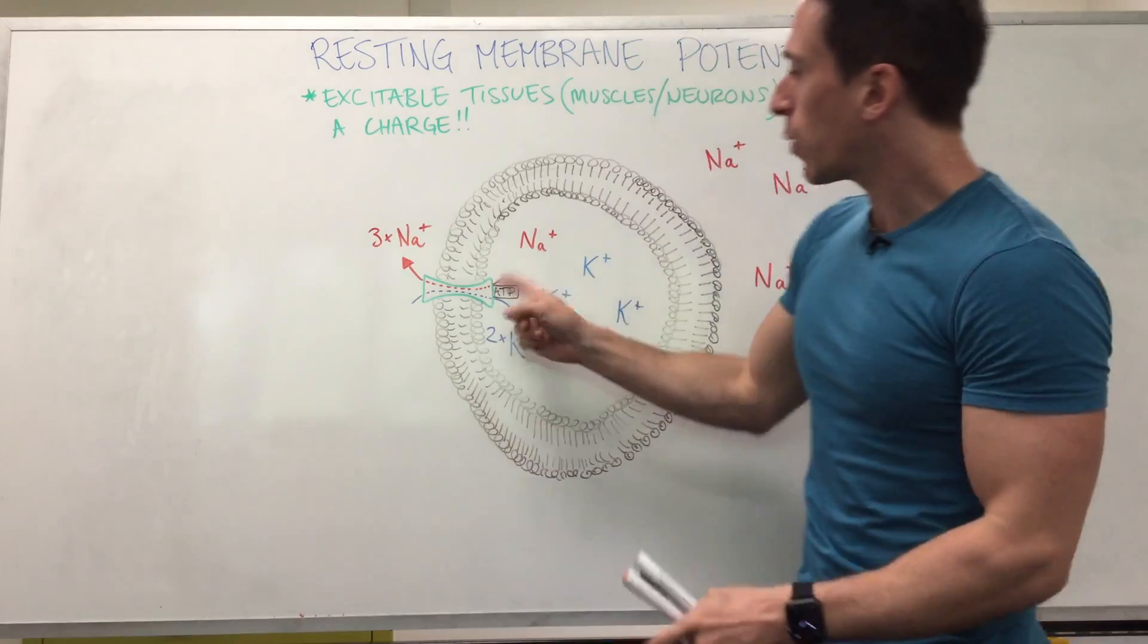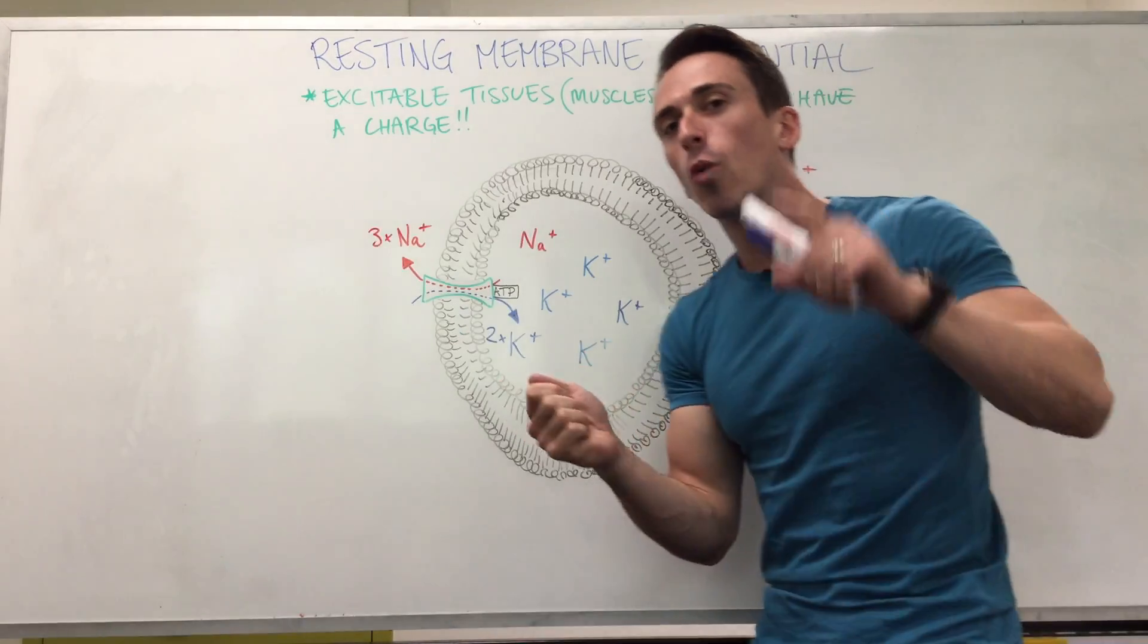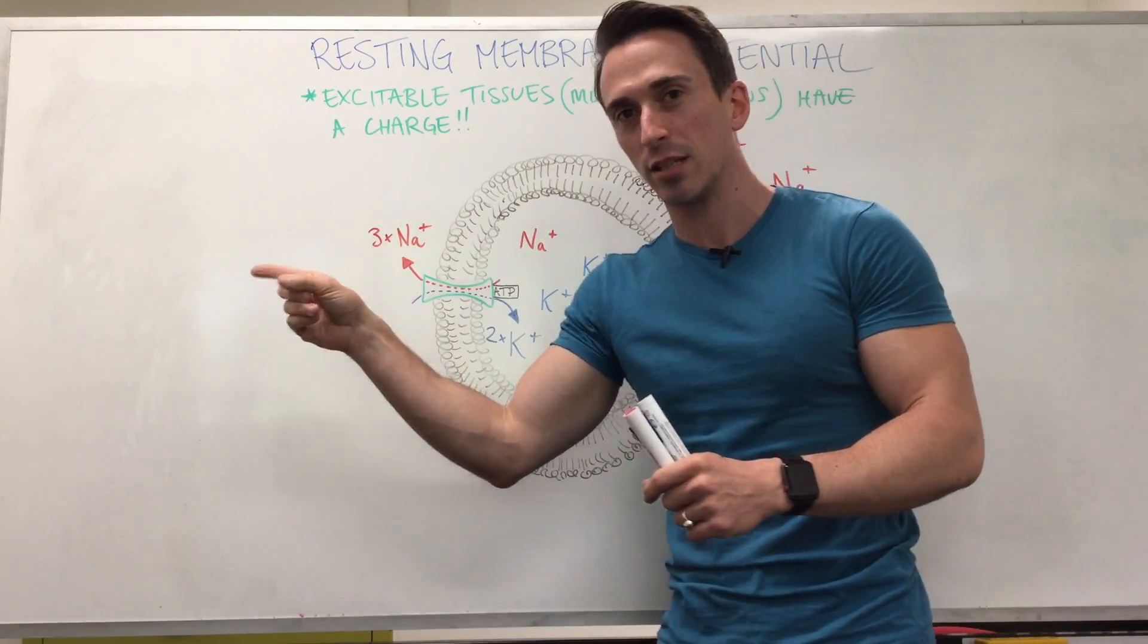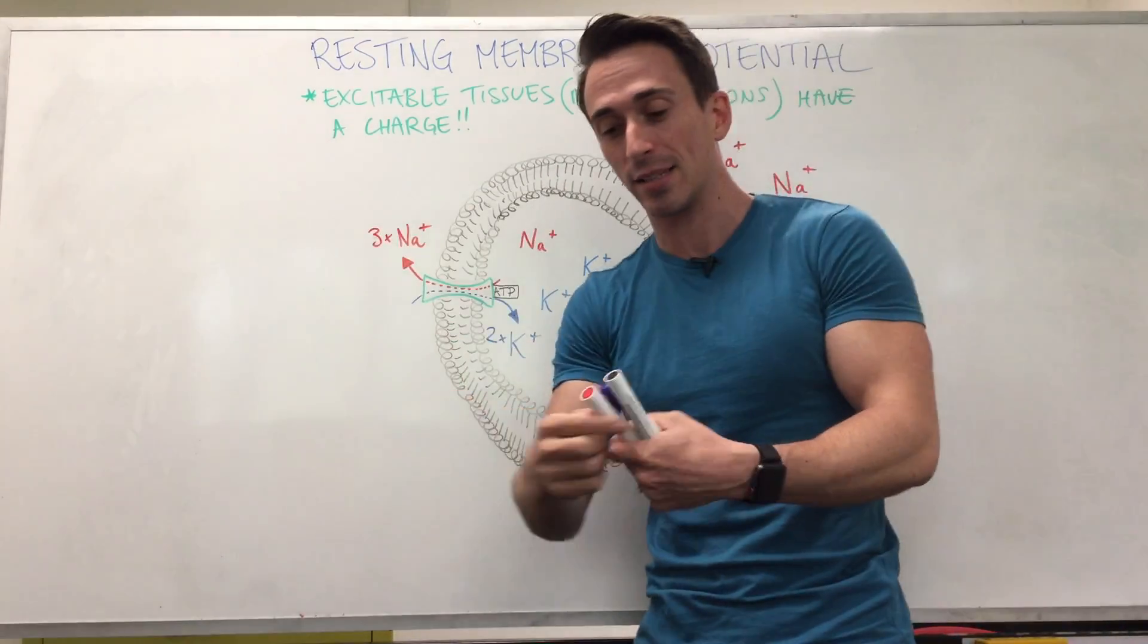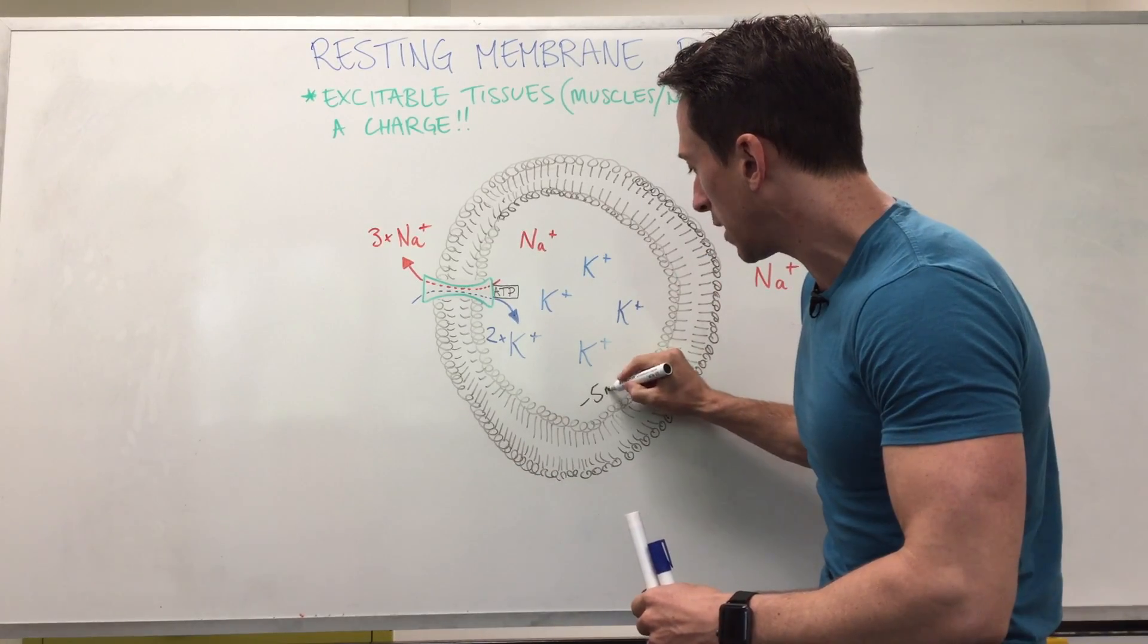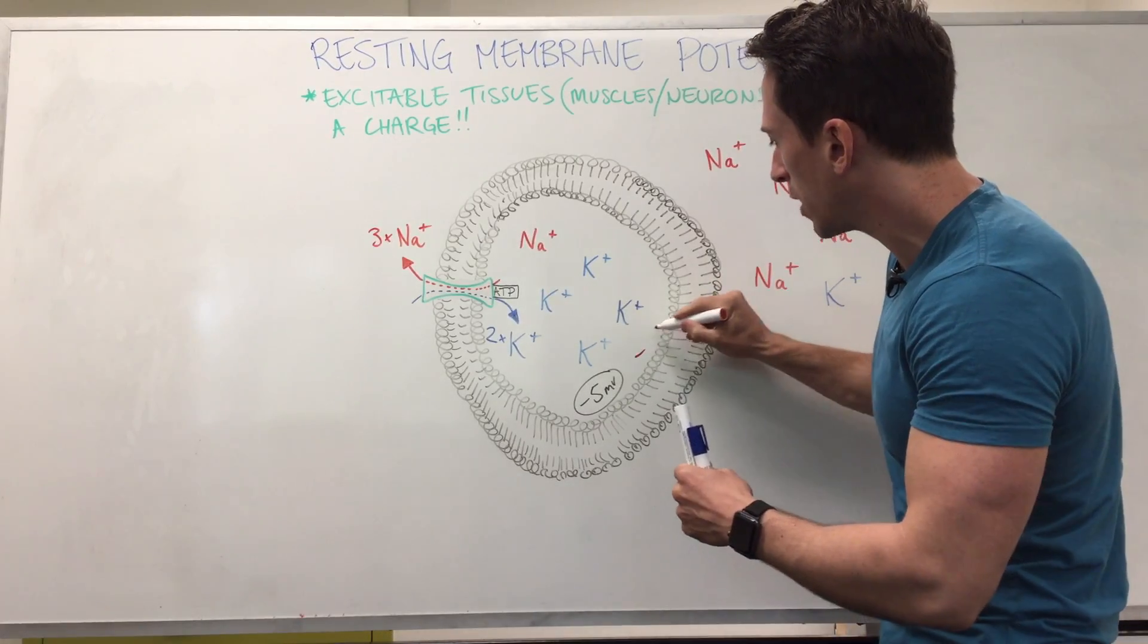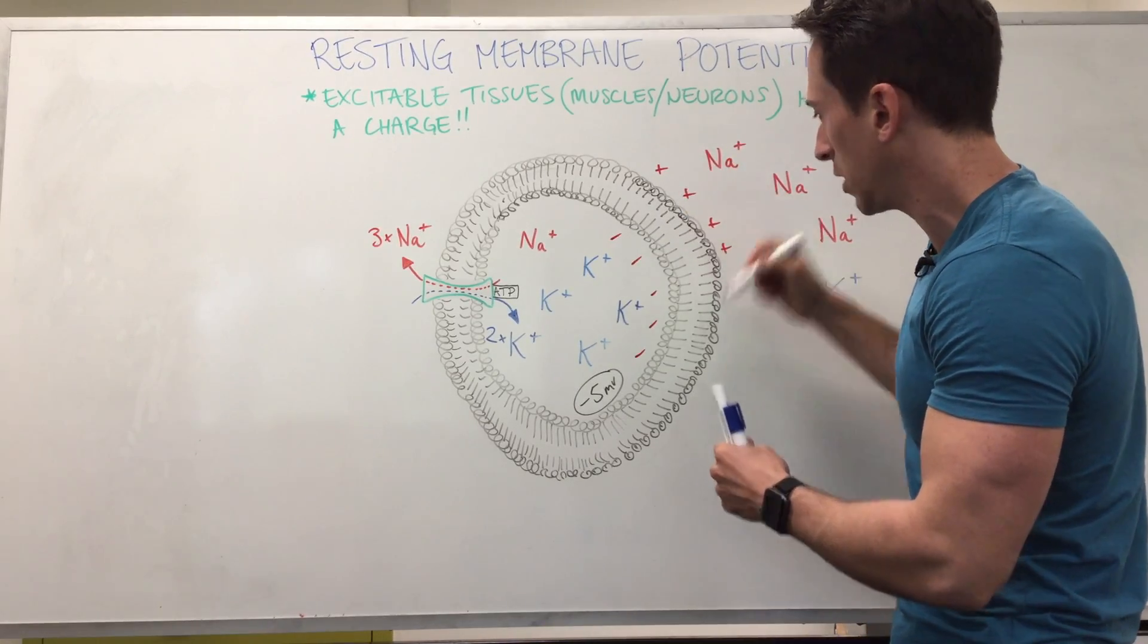However, once we pump out three positive sodium and pump in two positive potassium, we're actually throwing more positive things outside than we are inside, which means we have a slightly greater positive charge outside compared to inside, which means we have a slightly negative charge inside compared to outside. And this negative charge difference is around about negative five millivolts. That's the charge difference just from the sodium potassium ATPase pump. That means we have this slight negative charge on the inside of our excitable tissues compared to the outside of our excitable tissues.